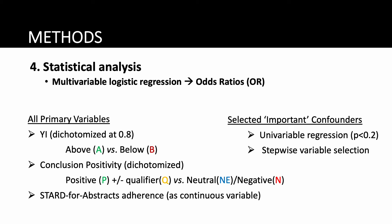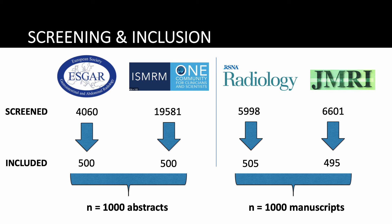We performed a multivariable logistic regression to obtain odds ratios for predicting acceptance to conferences and journals. For accuracy estimates, we evaluated the effect of Newton's index above 0.8 compared to a reference group below 0.8. For conclusion positivity, we evaluated the effect of positive conclusions with or without a qualifier compared to a reference group of studies with negative and neutral conclusions. We also controlled for statistically important potential confounders. In the end, we screened over 36,000 studies to reach our target of 1,000 conference abstracts and 1,000 journal manuscripts.